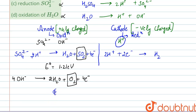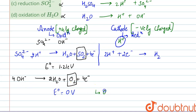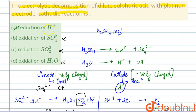For the OH⁻ reaction: 4OH⁻ → 2H₂O + O₂ + 4e⁻. The standard reduction potential E⁰ for this is 0 V. Since oxidation is the reverse of reduction, a lower reduction potential means a higher tendency to undergo oxidation. OH⁻ has the lower reduction potential, so O₂ will be evolved at the anode. Therefore, the correct answer is that reduction of H⁺ takes place at the cathode.